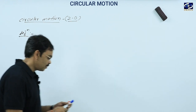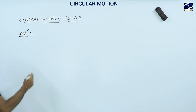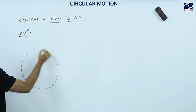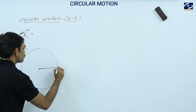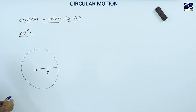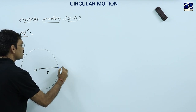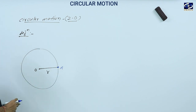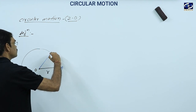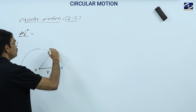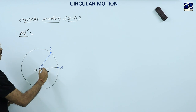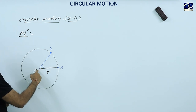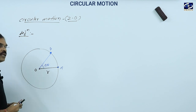Circular motion means yadi koi particle kisi circle mein motion kare. Suppose this is a circular path and the radius of this circular path is R. Suppose O is its center, and this is the initial position of the particle A. After time T, suppose its position is B, and the angle created at the center is del theta.